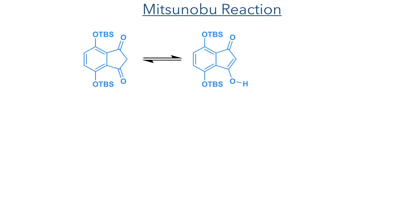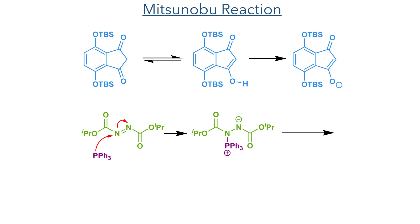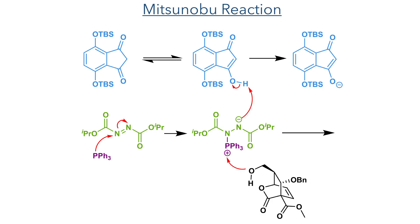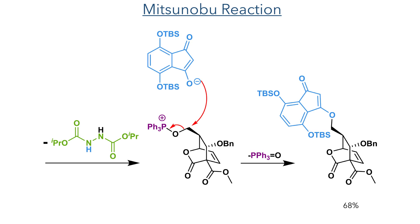The Mitsunobu reaction takes advantage of the keto-enol tautomerism exhibited by the diketone. Triphenylphosphine first attacks the DIAD reagent, generating a nitrogen-based anion that can deprotonate the enol. The triphenylphosphonium moiety is then attacked by the primary alcohol of the lactone coupling partner, producing an activated oxygen species upon elimination of the hydrazine by-product. This activated species serves as the electrophile, which is then attacked by the enolate, eliminating triphenylphosphine oxide and producing the target ether in a 68% yield.